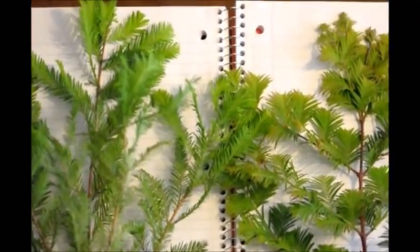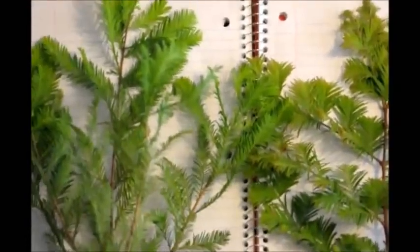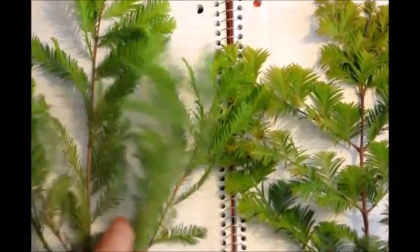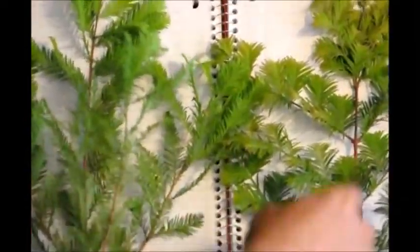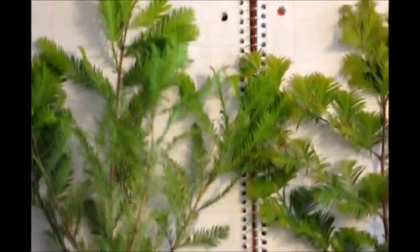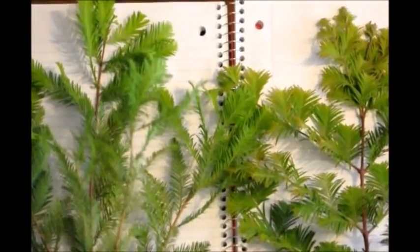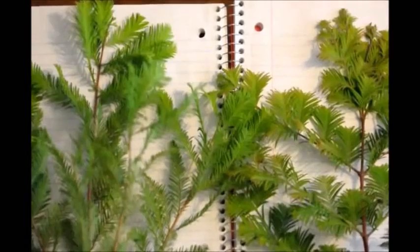First off, the similarities between the two are very much apparent. They both have green foliage. They both have a browner bark to them. They both are a deciduous conifer, which means that they have cones and they lose their leaves in the wintertime.